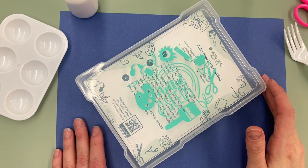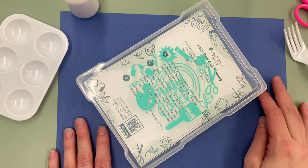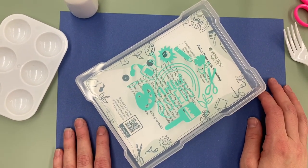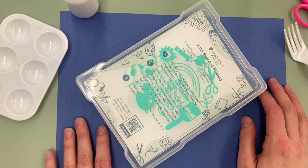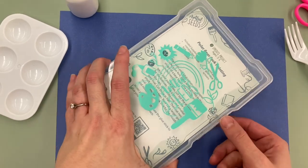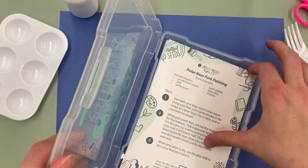Hi artists! Art teacher Abby here again, excited to make some more art with you today. Today we're making polar bear fork paintings from the Sprouts Winter Box. Let's get out our project card and see what we need.